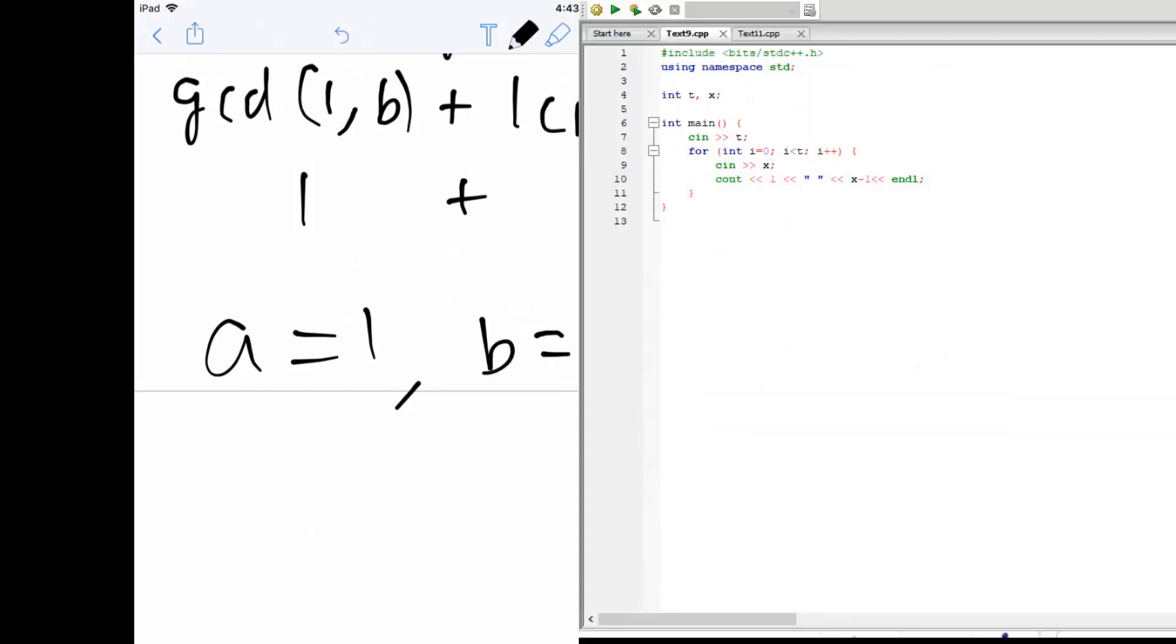Okay, let's look at the code for this. Essentially, all we're doing here is we're reading in the number of test cases. For every test case, we read in our value x, and we know that A equals one. So the first value we print is one.